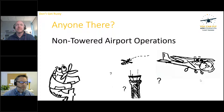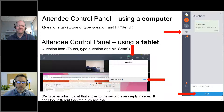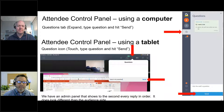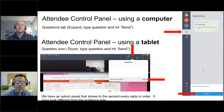Quick housekeeping items first. For those that have questions for us, please go ahead and use the GoToWebinar control panel. For those on a computer, if you click the question mark in the little bubble, it'll pop up that screen. You've got the ability to type in your question — please make sure that you hit send. On a tablet, same concept — press the question mark bubble, type in your question, press send, and we'll respond either live or type back to you.